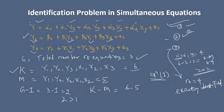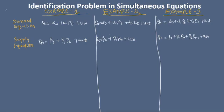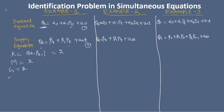Now we have a different example. Here K — the total number of variables — includes Qt and Pt only, so K equals 2. For the demand equation (equation 1), M equals 2 as well. G equals 2, so G minus 1 equals 1, and K minus M equals 2 minus 2 equals 0. Since 1 is greater than 0, this equation is unidentified.